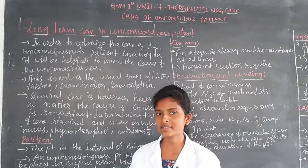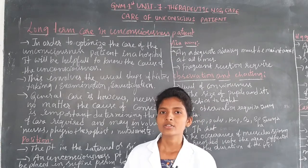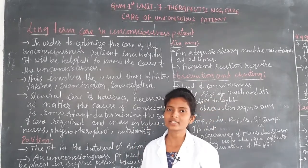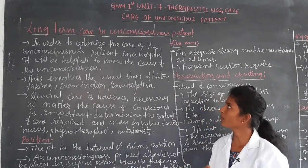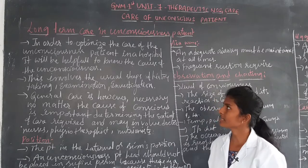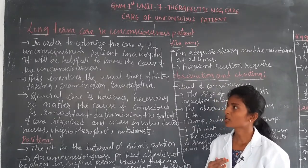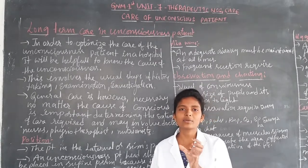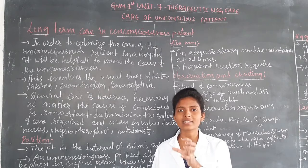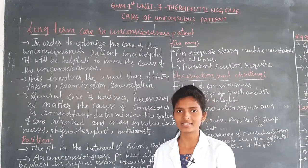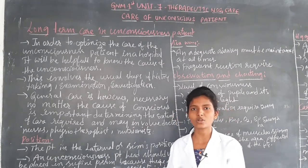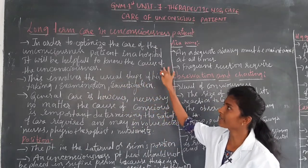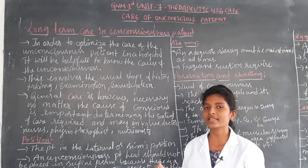We have seen in the previous class emergency care for unconscious patients — how they give care and treat the patient in emergency. Now coming to long-term care for the unconscious patient. In order to optimize the care of the unconscious patient in a hospital, it will be helpful to know the cause of the unconsciousness. If the nurse knows the exact cause, she can provide proper care depending on that cause.